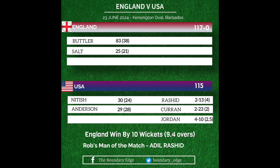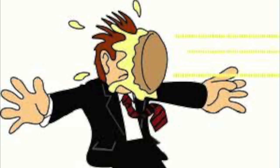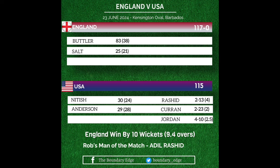The wickets were spread. Rashid took 2 for 13 off 4, Curran 2 for 23 off 2, and Jordan 4 for 10 off 2.5. Rhys Topley also got one, and Liam Livingstone managed to get one. Surprisingly, Jofra Archer didn't take a wicket today.